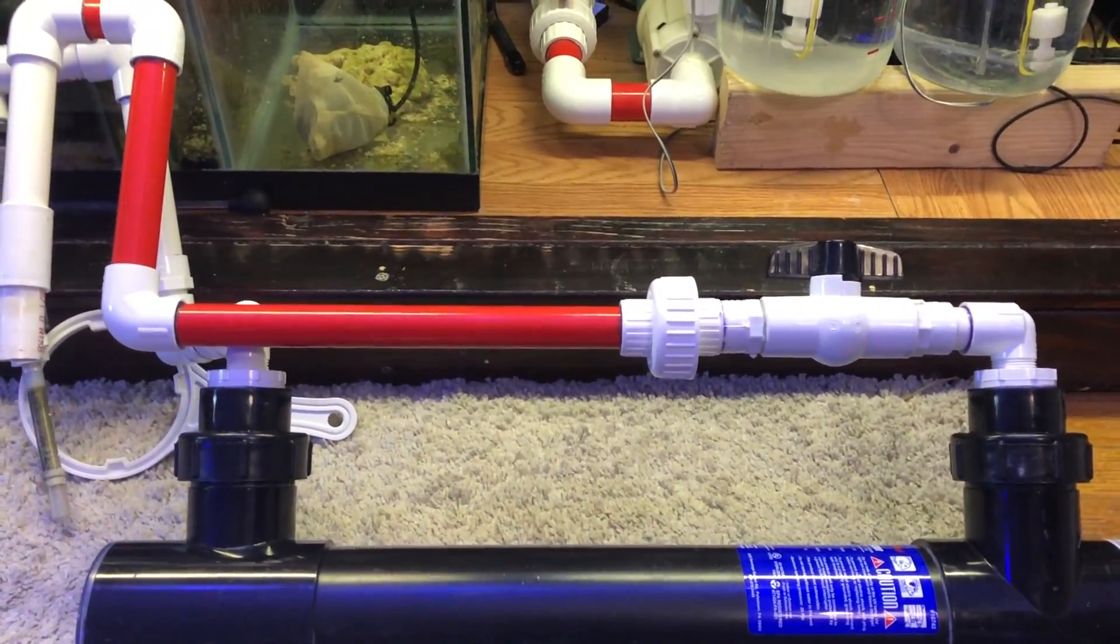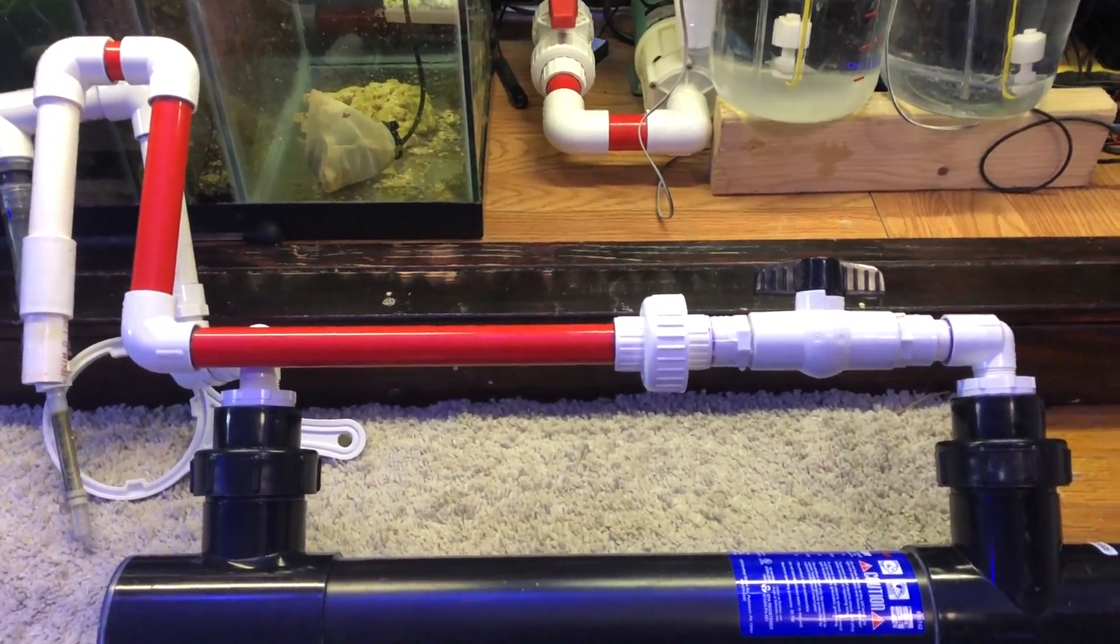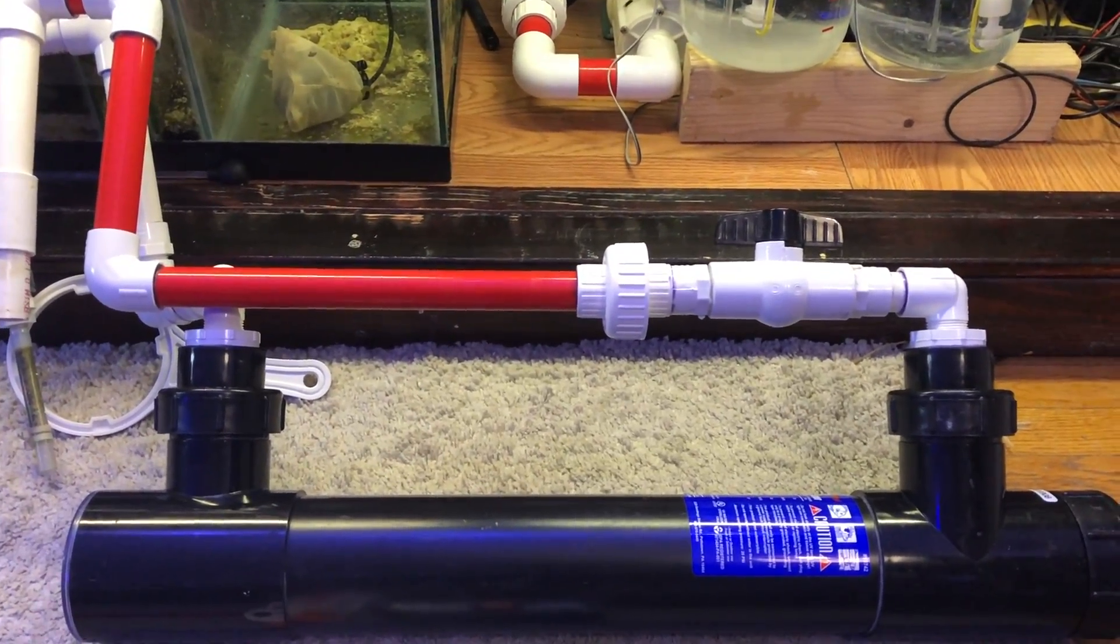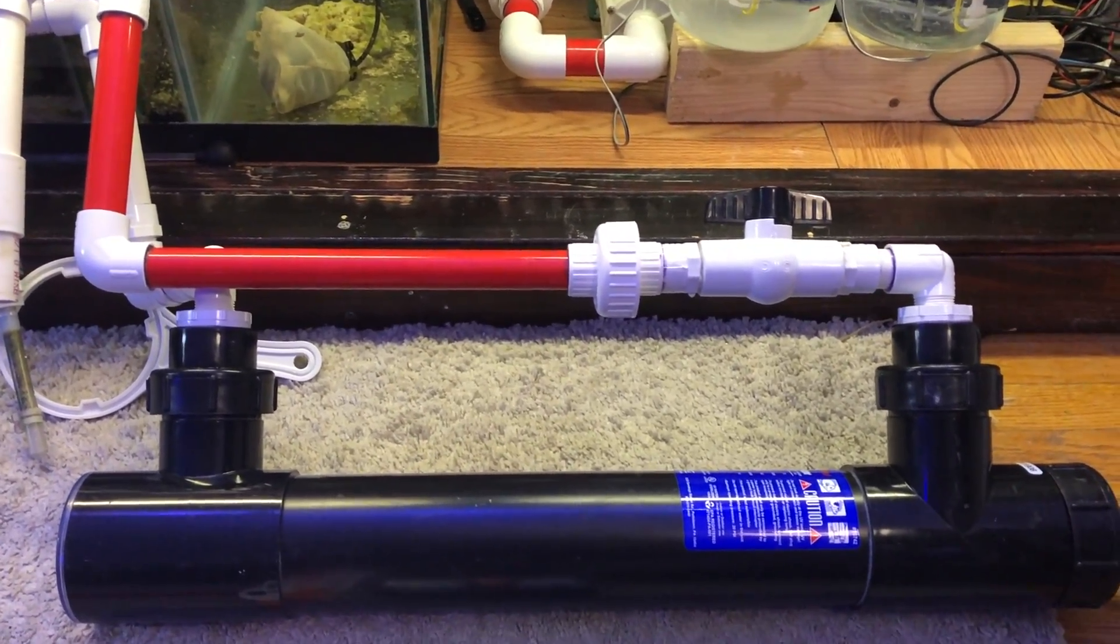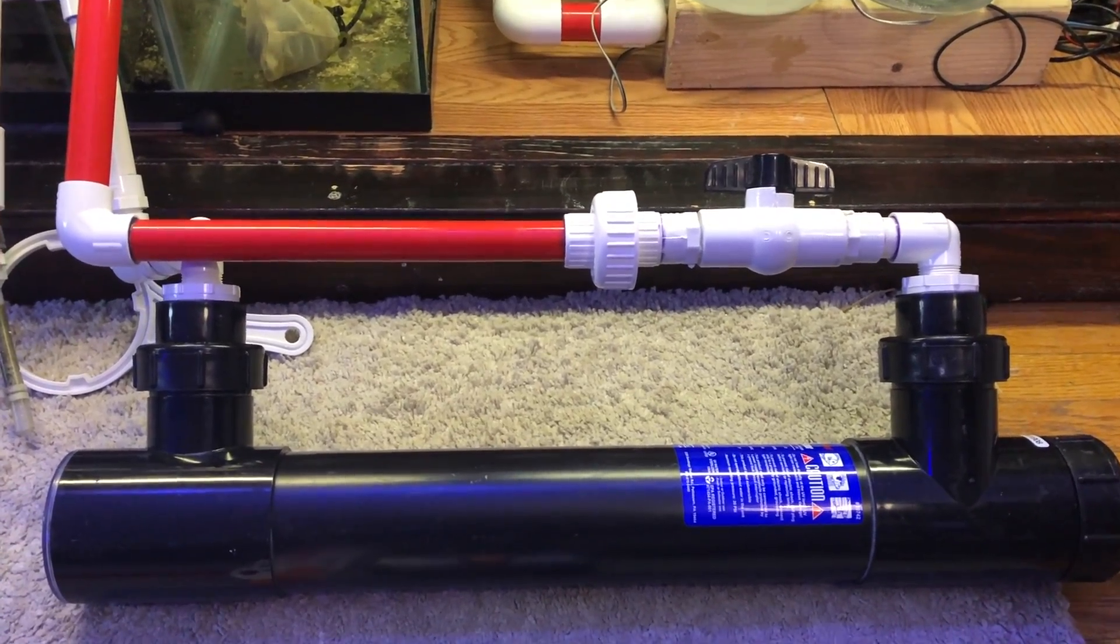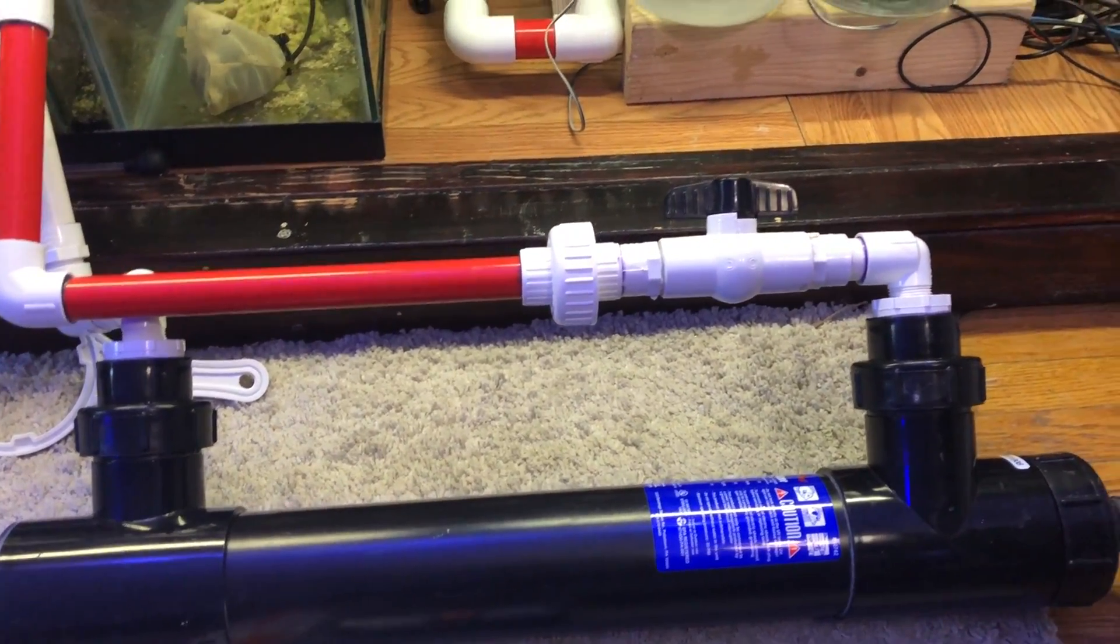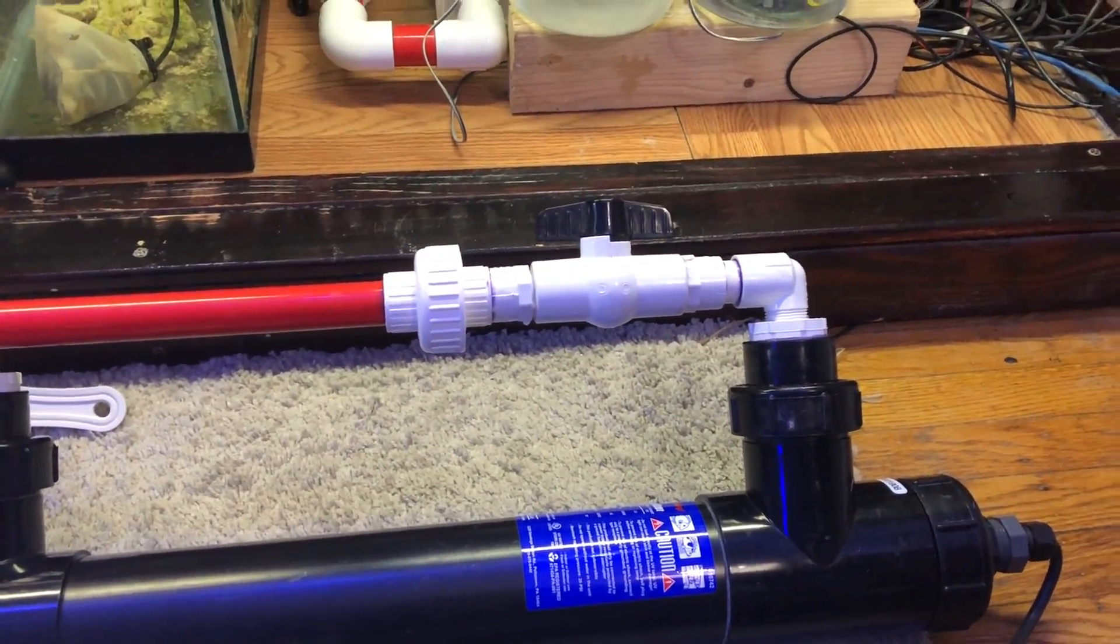I want to monitor the flow coming through here and make sure I'm keeping it at the proper flow rate, which for this model UV sterilizer is between 79 and 131 gallons per hour.